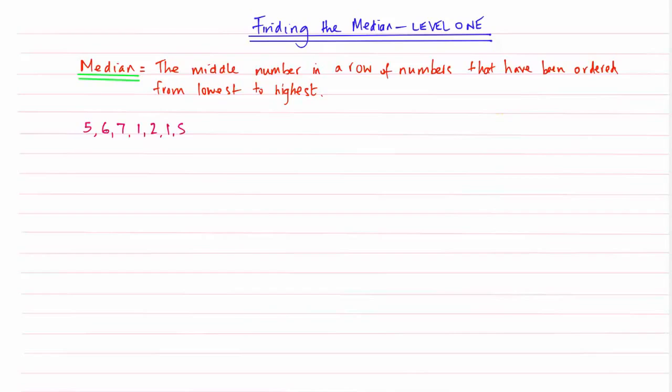So here is a typical question where there are just a string of numbers written in a row. One thing you need to notice is that here there are 7 numbers written in a row. Now this is finding the median level 1 and this is only dealing with how to find the median when there are an odd number of numbers.